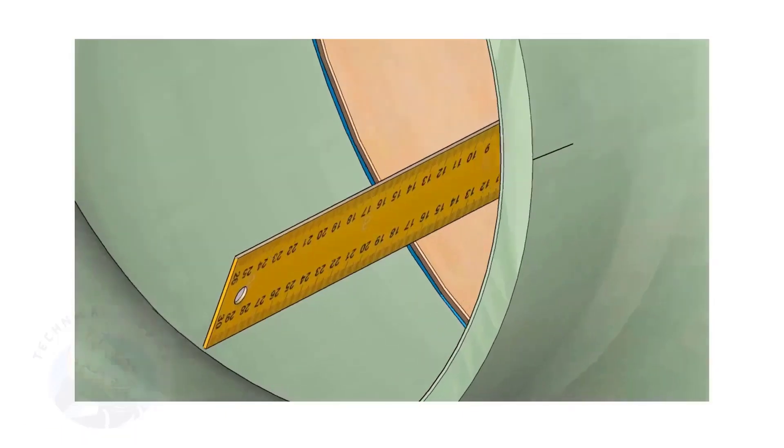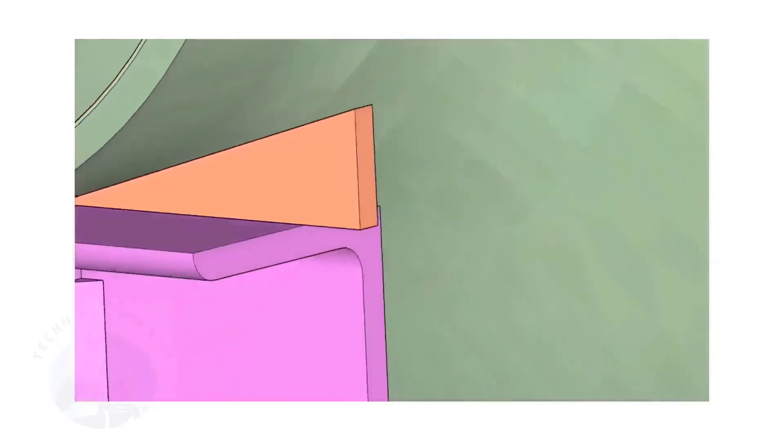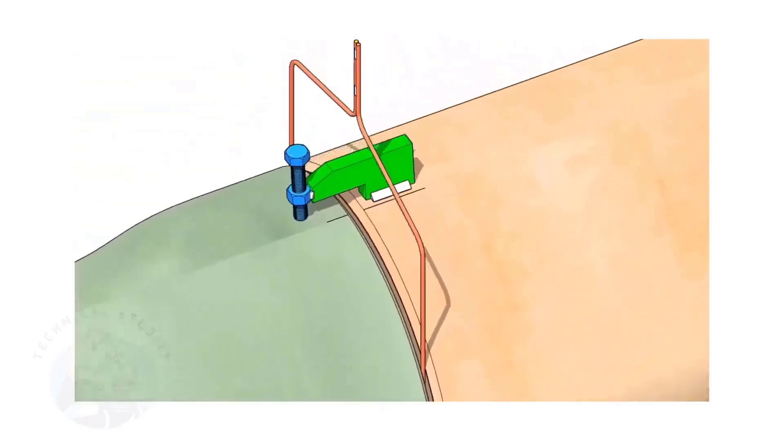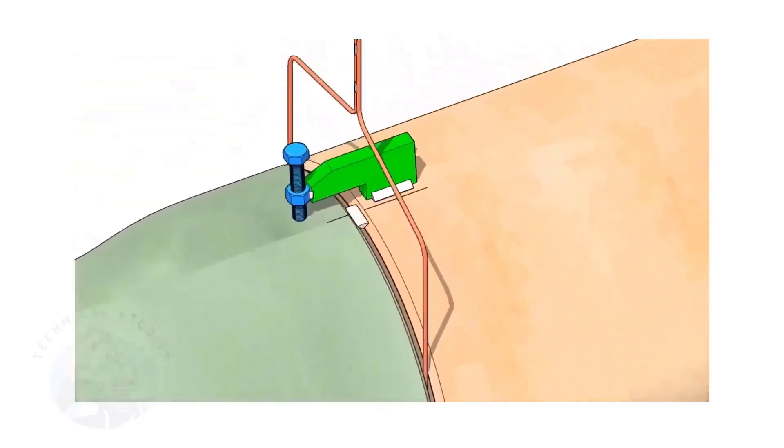By adjusting the jack bolts, correct the overlap of the joint inside the pipe. Now, tack weld on the top side of the joint.